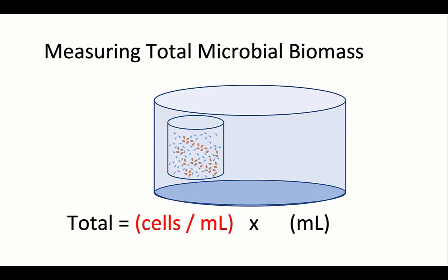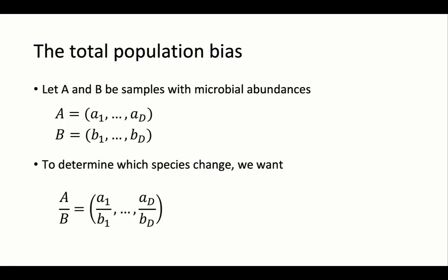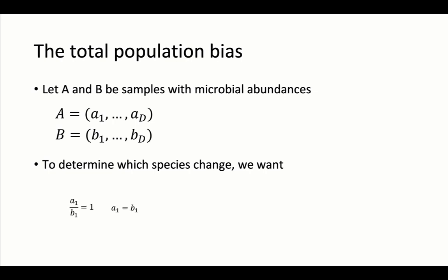However, if we cannot obtain a good estimate for the volume of the system, inferring the total microbial biomass and differentially abundant microbes becomes more complicated. If we cannot infer the total microbial biomass, then what can we infer given our measurements? To better understand this, let's try to reformulate this model in mathematical terms. Let's encode the microbial abundances in environment A and B—these are the true abundances in the environment. To determine which species have changed, all we need to do is compute the ratio of each microbe between the two environments.